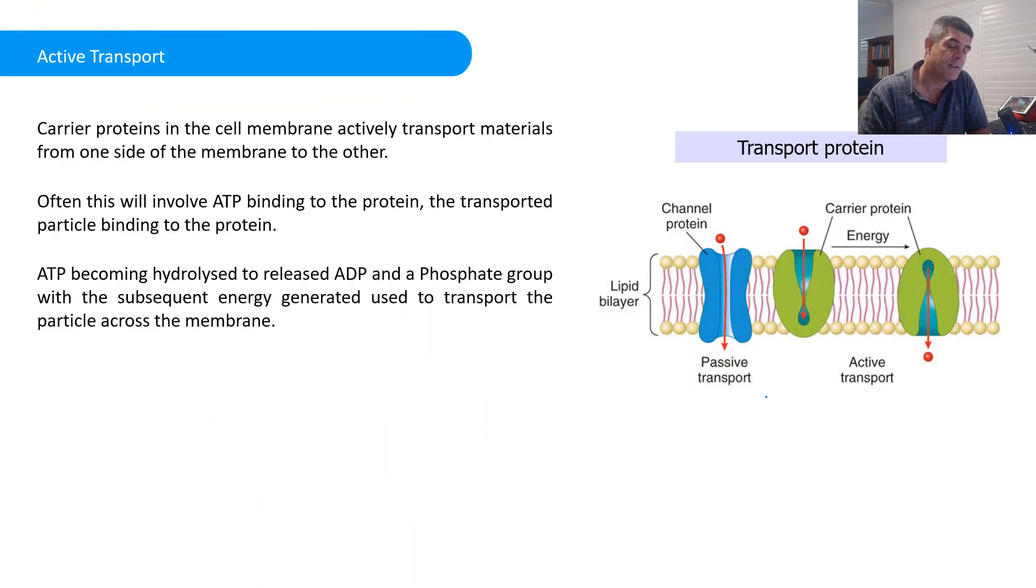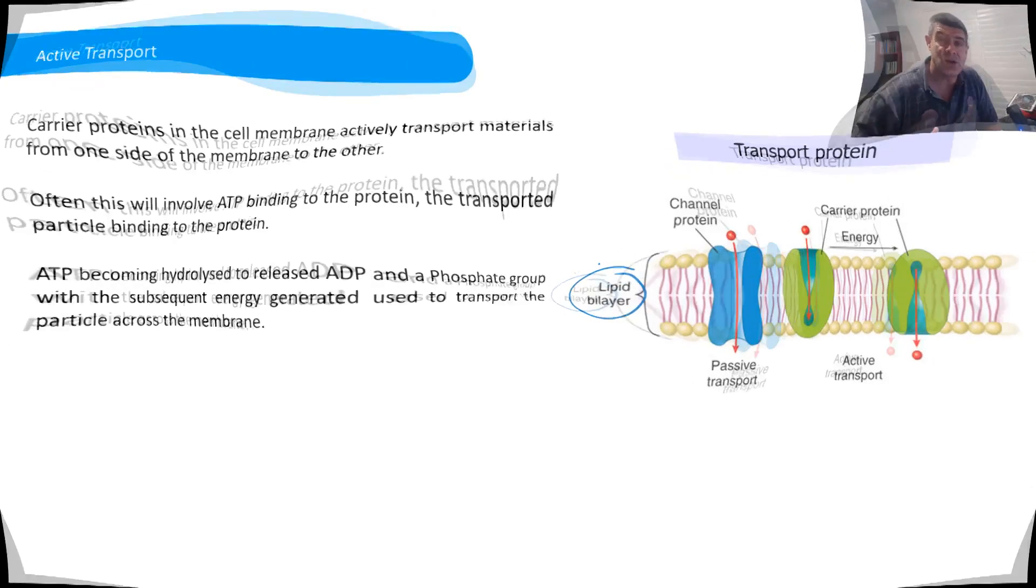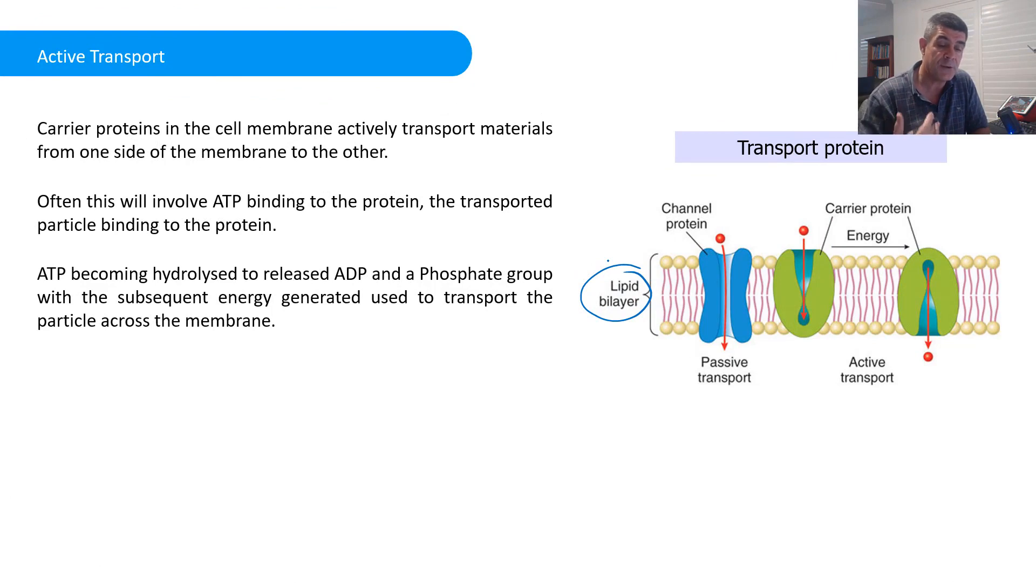We've looked at the fluid mosaic model of the cell membrane, this phospholipid bilayer, which actually contains within it different proteins, some of which are integral to the structure and the integrity of the membrane, but others which are actually helping to facilitate the movement of particles into and out of the cell through these protein channels. And some of that is still through passive transport, but in other occasions there are particular carrier proteins that will bind to certain particles and assist their passage through the cell, either from the inside to the outside or outside to the inside.